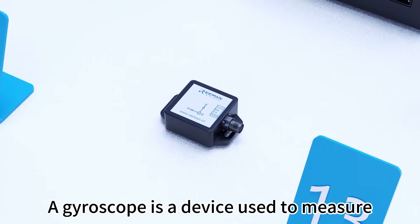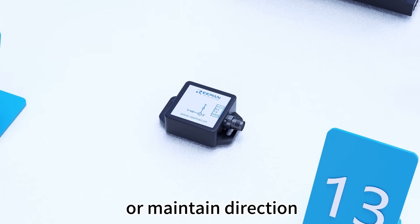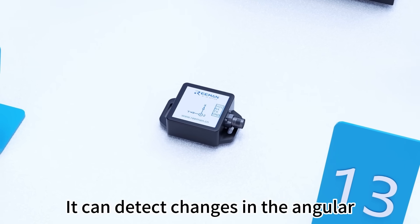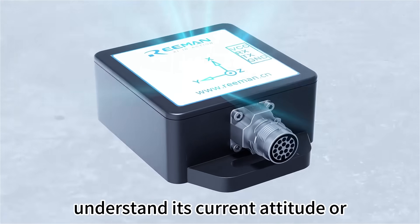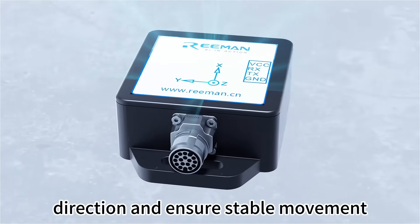A gyroscope is a device used to measure or maintain direction. It can detect changes in the angular velocity of a robot, thereby helping the robot understand its current attitude or direction and ensure stable movement.